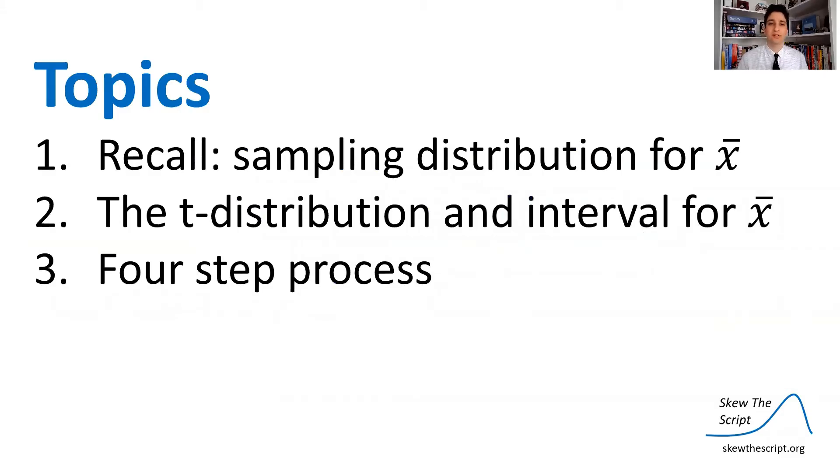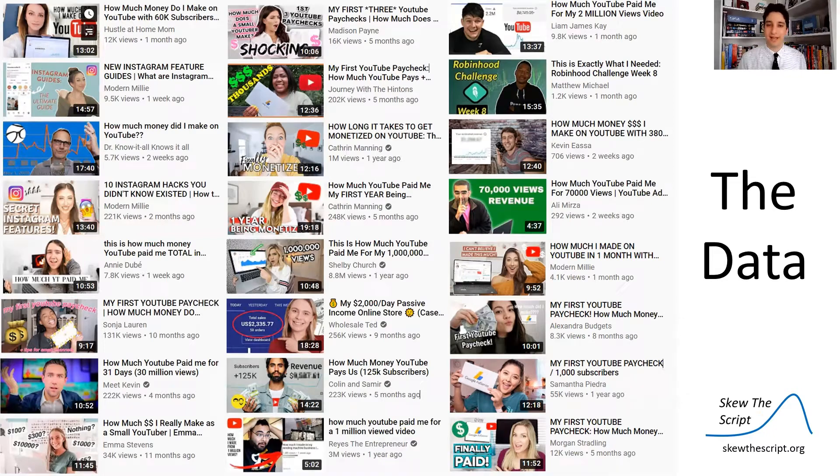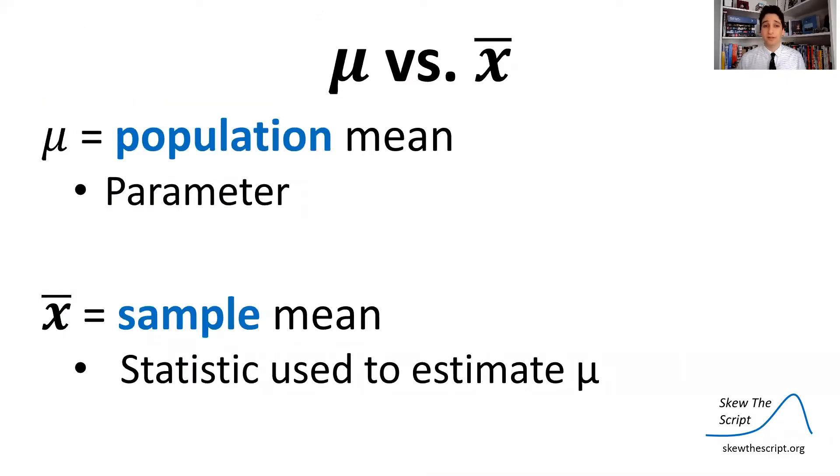So topics for today, we're first going to talk about the sampling distribution for a sample mean. And the data we're going to be assessing today was collected directly from YouTube. I searched up how much I make on YouTube and you've probably seen these videos before. YouTubers will take you through their ad revenue on the site. And the nice thing is that it's reliable data because they're really displaying for you their exact pages ad revenue. Very hard to make a fake page of that. And they showed dynamically how much they've been making month to month. So I randomly sampled among my search, 35 results. And today we're going to be looking at estimating the mean incomes from those videos.